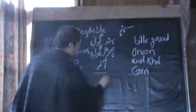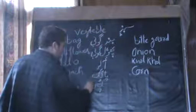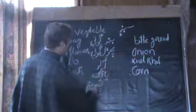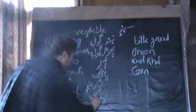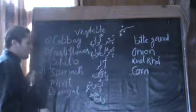Spinach in Kashmiri is the same as in Urdu — 'Palak.' Then we have mint, which we call 'Pudna.' Be very careful while reading the pronunciation marks I write — sometimes I write them, sometimes you are expected to understand yourself. Like brinjal, which is called 'Vangun.'